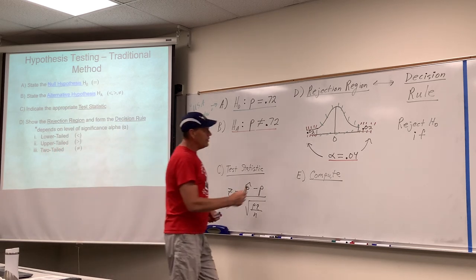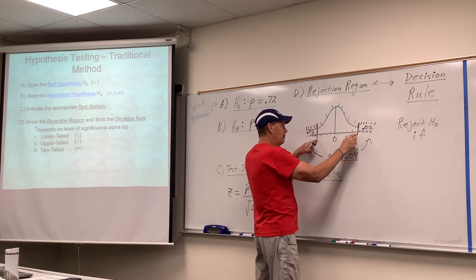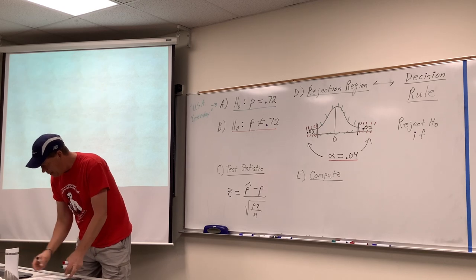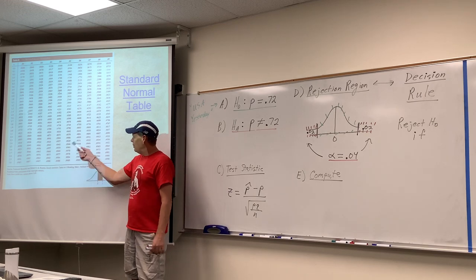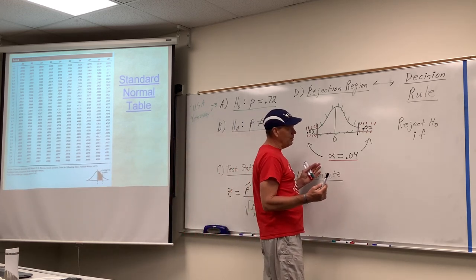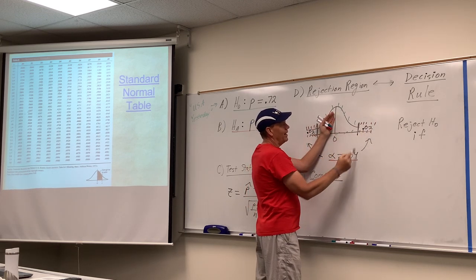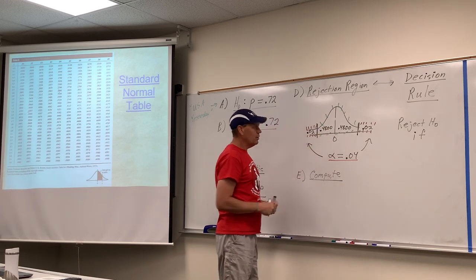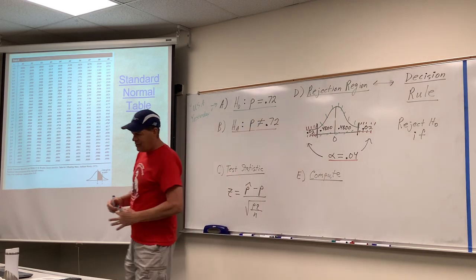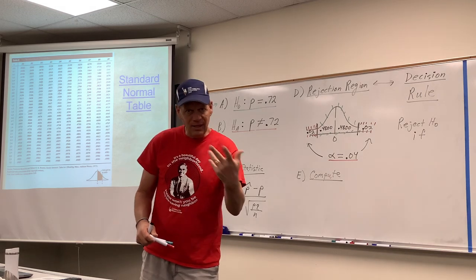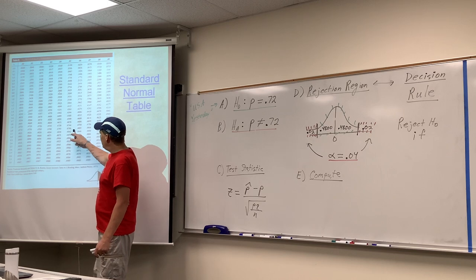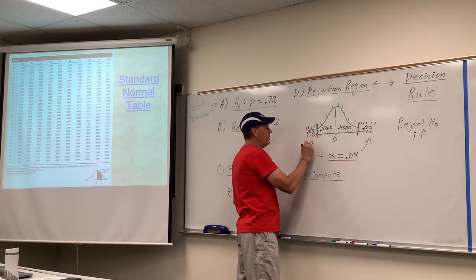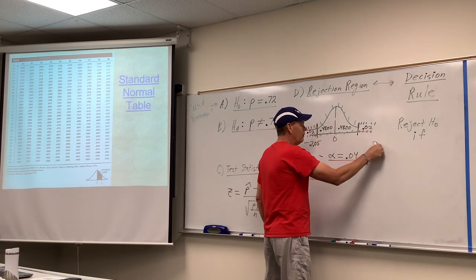Using our standard normal table, we need the middle sliver. If we take the upper half of the bell curve, 0.5, and subtract the 2% tail, that leaves 48% — so two middle slivers of 48%. In our table, 48% lines up closest to Z = 2.05. So we have the lower boundary at negative 2.05 and the upper boundary at positive 2.05.